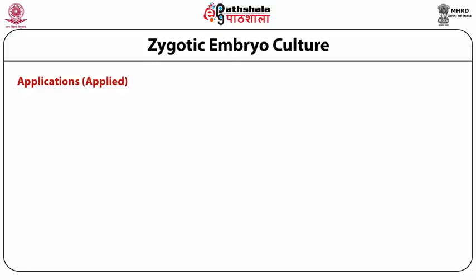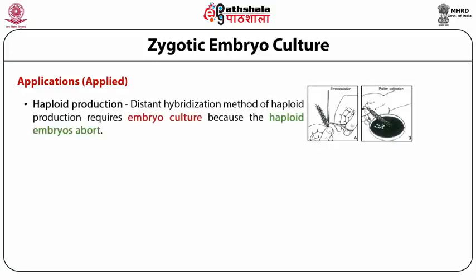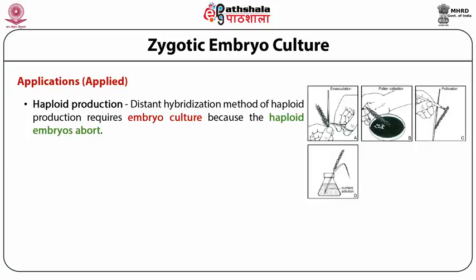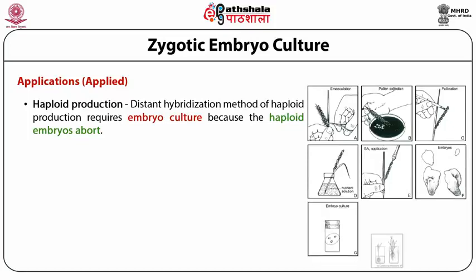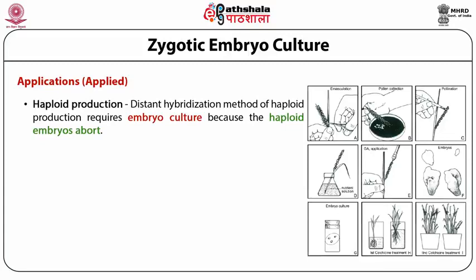Another application is haploid production. In the method of distant hybridization for in vitro haploid production, after fertilization the chromosomes of one parent are selectively eliminated, leaving a haploid embryo. But normally this embryo aborts and cannot develop fully. In such cases, excising the embryo before abortion and culturing it on medium has helped to raise full haploid plants. So haploid production by distant hybridization is aided by embryo culture.